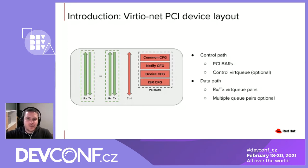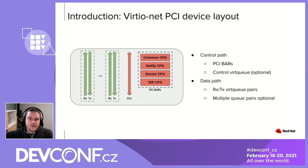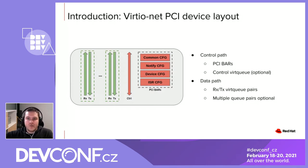Finally, we have the ISR config, which is used to distinguish between normal virt-queue interrupts and device config interrupts. The Virtio Net control path is also composed of an optional control virt-queue, used to configure different features related to the networking device, such as multi-queue, MAC address, or VLAN filtering. Then in green, we have the data path formed by queue pairs, a pair being composed of one receiving queue and one transmit queue. The specification mandates at least one queue pair, but multi-queue is possible if requirements are met on both the driver and the device side.